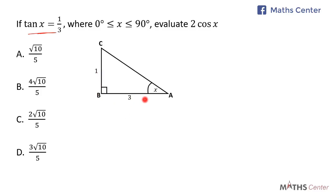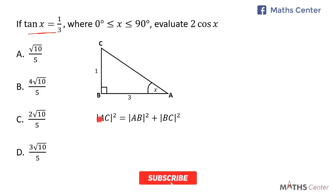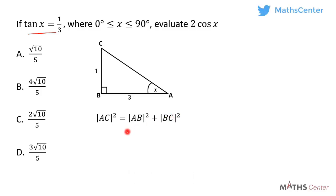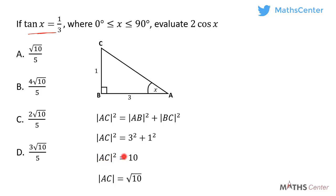So we now have the right angled triangle with side AB as 3 and side BC as 1. We can use the Pythagoras theorem to find side AC. When we apply the Pythagoras theorem, we have AC squared is equal to AB squared plus BC squared. AB is 3 and BC is 1, so AC squared is equal to 3 squared plus 1 squared, which gives us 10. Taking the square root of both sides, AC is equal to square root of 10.